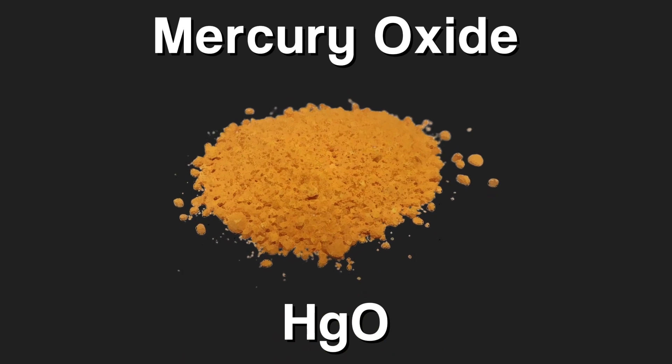Mercury oxide is made from oxygen and mercury. It is orange in color and toxic, so stay away.